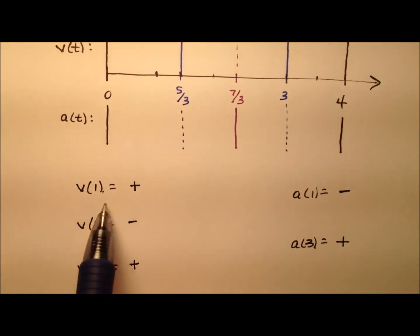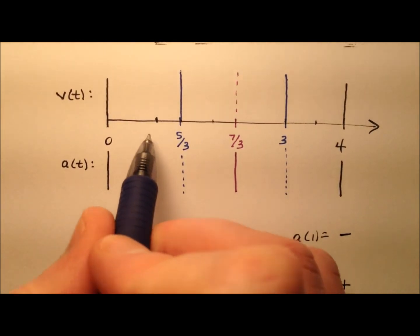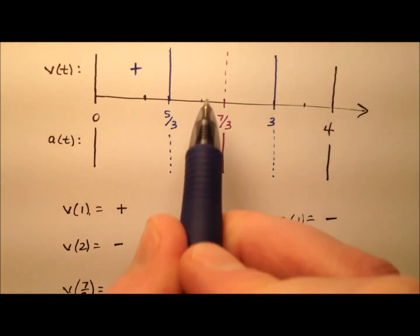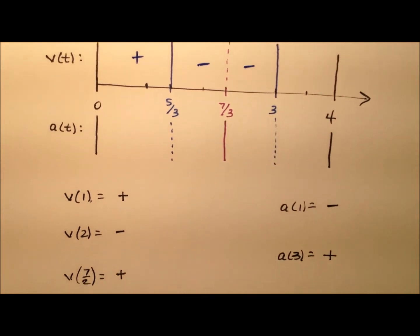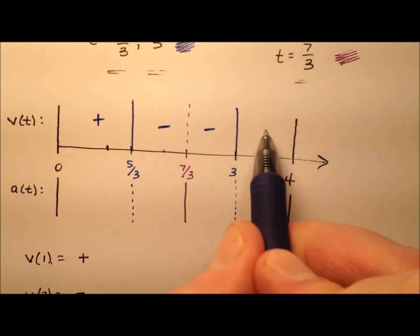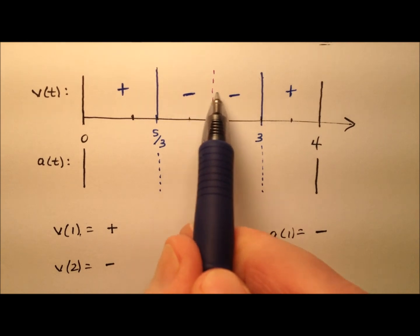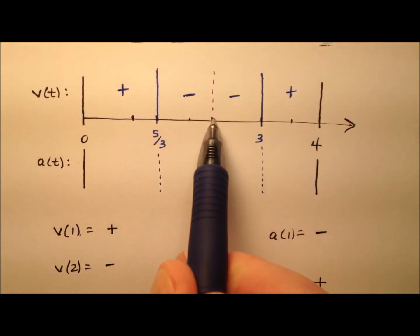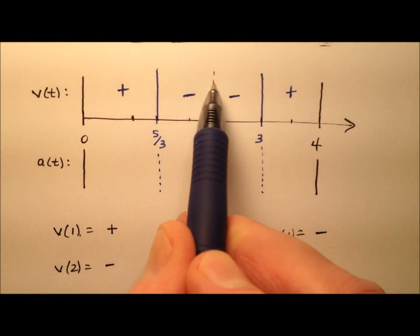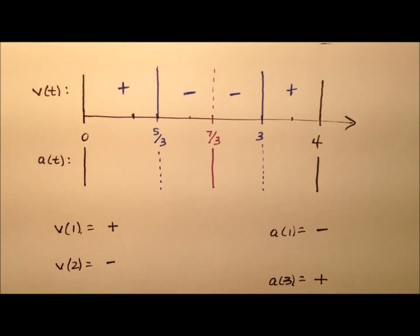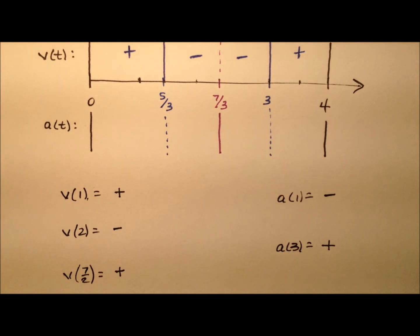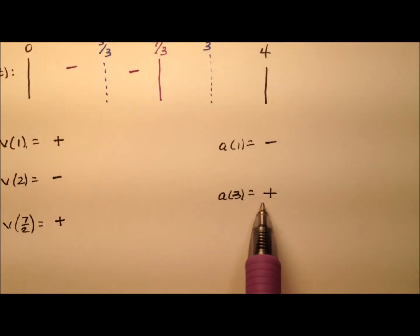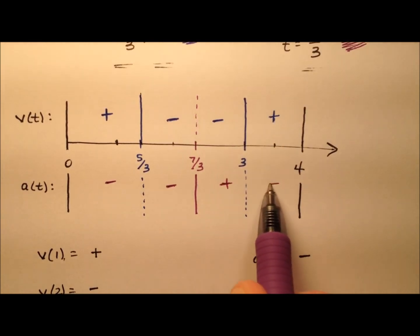Let's place the velocity signs on the number line. At t equals 1, velocity is positive — that's the first region. At t equals 2, velocity is negative — that covers the middle region on both sides of the dashed 7 thirds line. At t equals 7 halves, velocity is positive again. For acceleration: the first region is negative, and the second region after 7 thirds is positive.